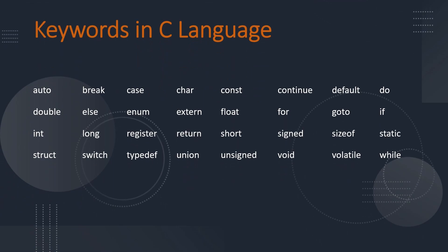In C language, we have something called keywords. Keywords are special words which have special functionality, which have special meaning and with which you can perform specific actions.